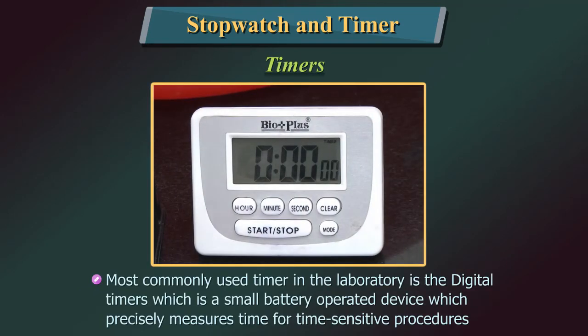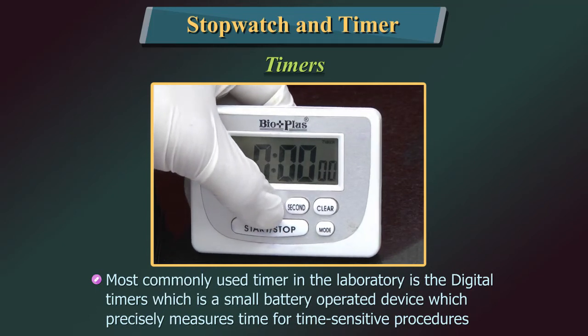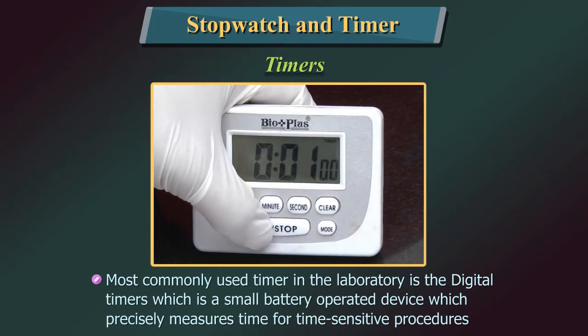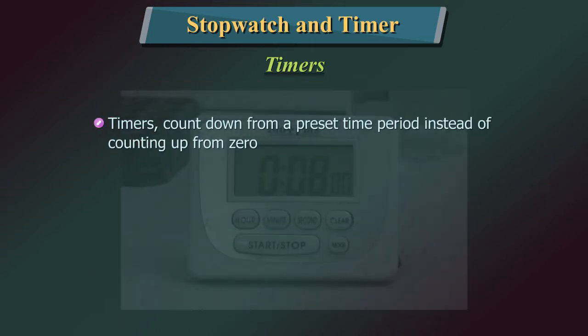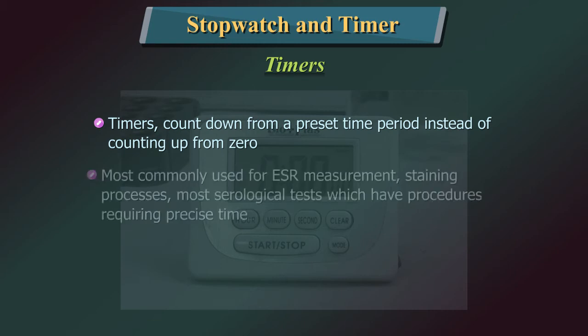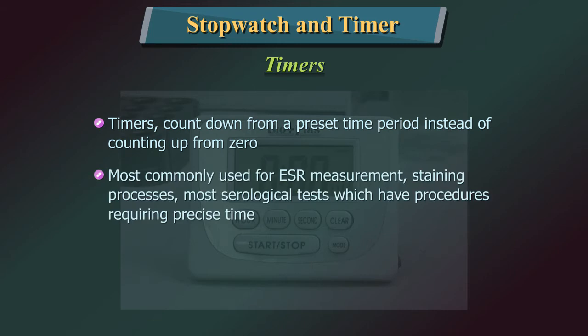The most commonly used timer in the laboratory is the digital timer, which is a small battery-operated device that precisely measures time for time-sensitive procedures. Timers count down from a pre-set time period instead of counting up from zero. They are most commonly used for ESR measurement, staining processes, and most serological tests which have procedures requiring precise time.